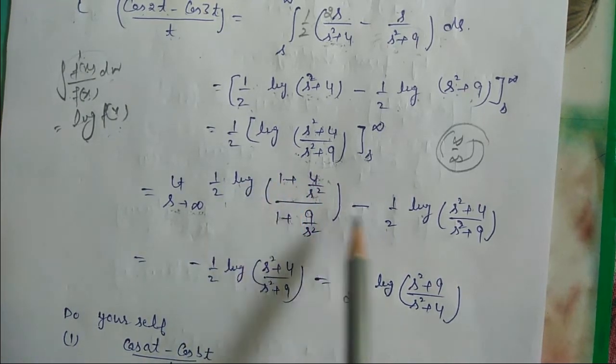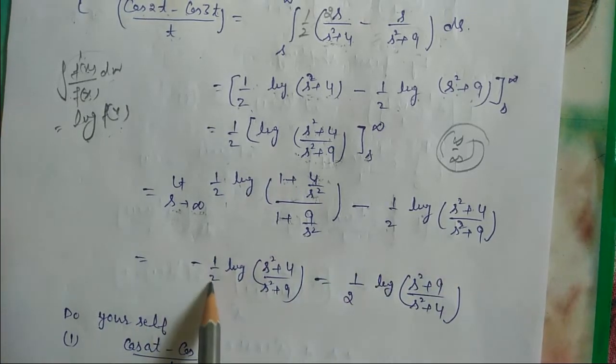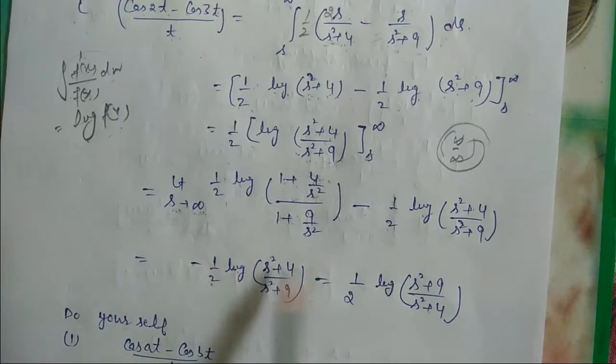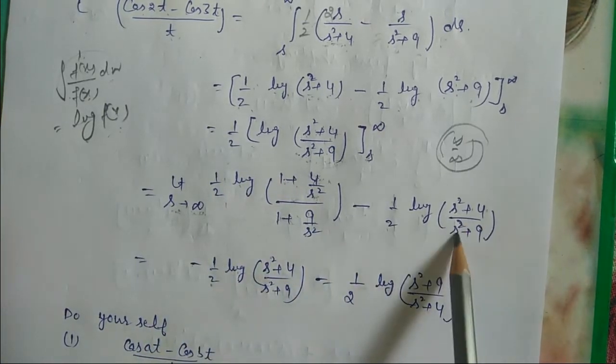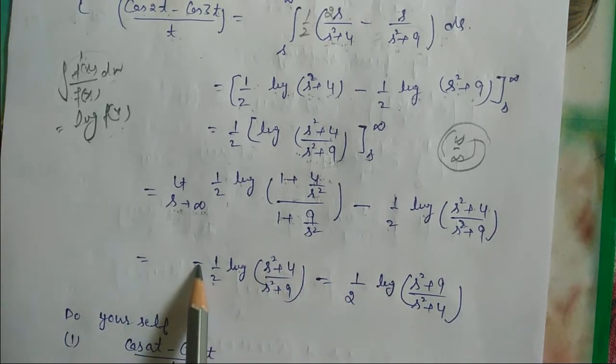So we have 0 minus (−1/2) log[(s²+4)/(s²+9)] evaluated at the lower limit s. This simplifies to (1/2) log[(s²+9)/(s²+4)] as the final answer.